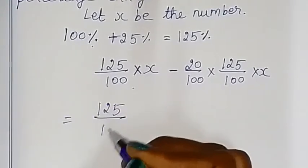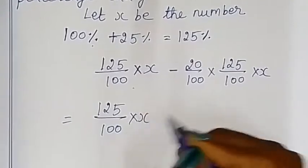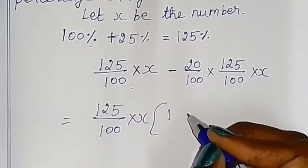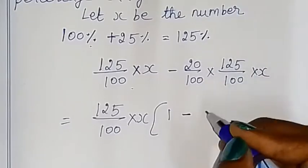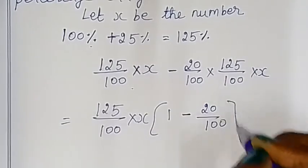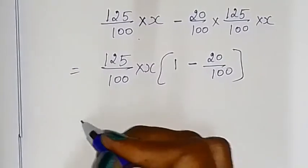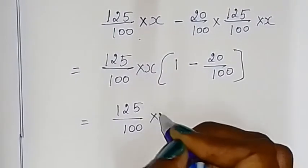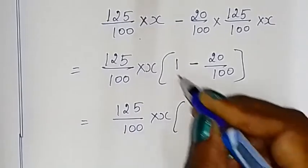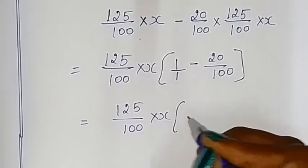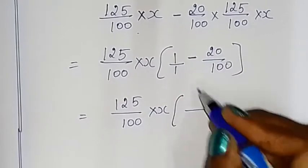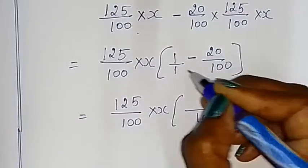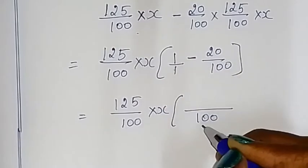Now take the common factor: 125 by 100 into x, multiplied by (1 minus 20 by 100). To simplify, the LCM is 100, so we work with the denominator accordingly.